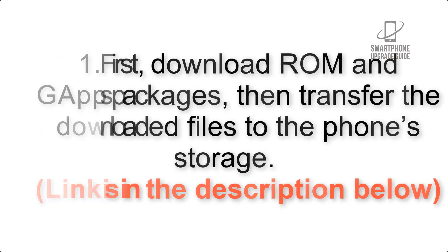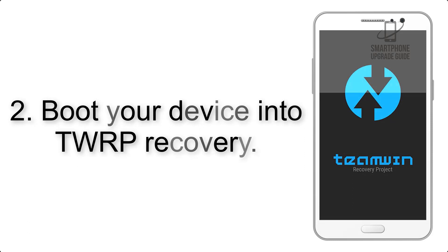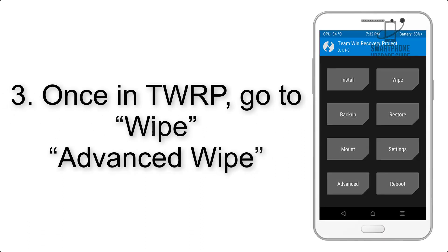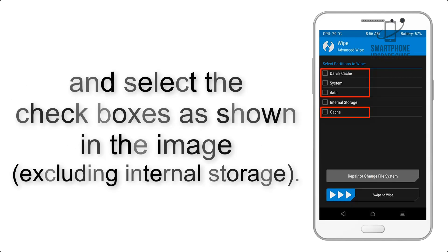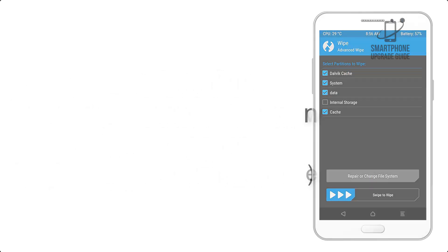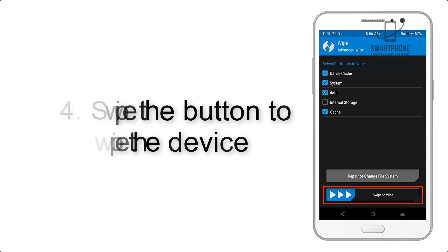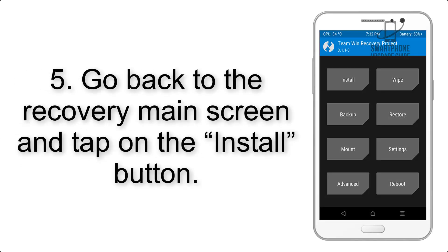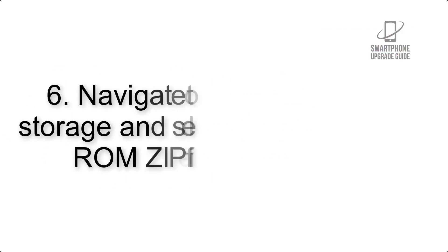Step 2: Boot your device into TWRP recovery. Once in TWRP, click on Wipe, then Advanced Wipe, and select the checkboxes as shown in the image, excluding internal storage. Step 4: Swipe the button to wipe the device.